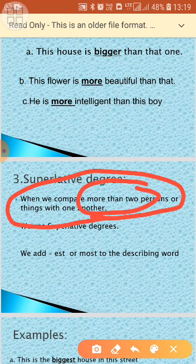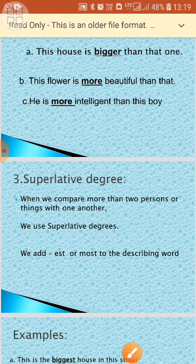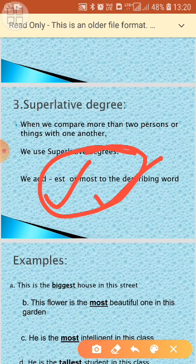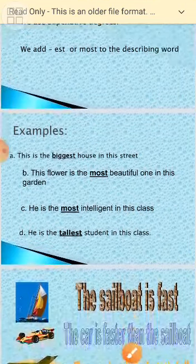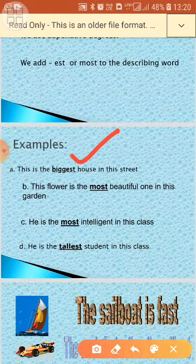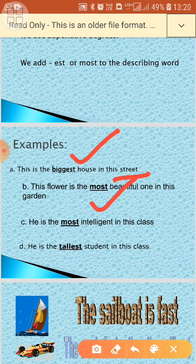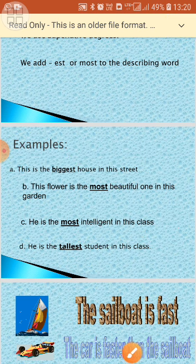Superlative degree is used when we compare more than two persons or things with one another — for example, the best student in the whole class. In superlative degree, we add 'est' or 'most.' For example: 'This is the biggest house in this street,' 'The flower is the most beautiful one in this garden,' 'He is the most intelligent in this class,' and 'He is the tallest student in the class.'